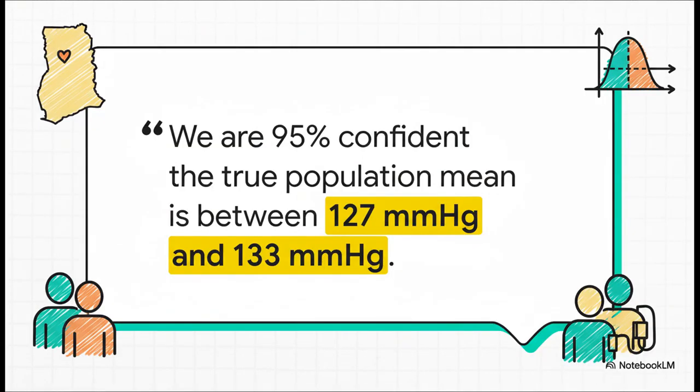When it's time to report back, how do you actually say this? This part is so important. For our Ghana example, the proper, official way to say it is, we are 95% confident that the true mean systolic blood pressure for the entire community is between 127 millimeters mercury and 133 millimeters mercury. That sentence is packed with useful, honest information.